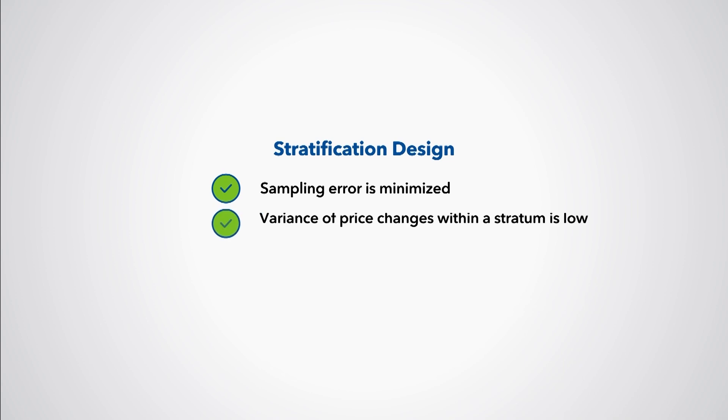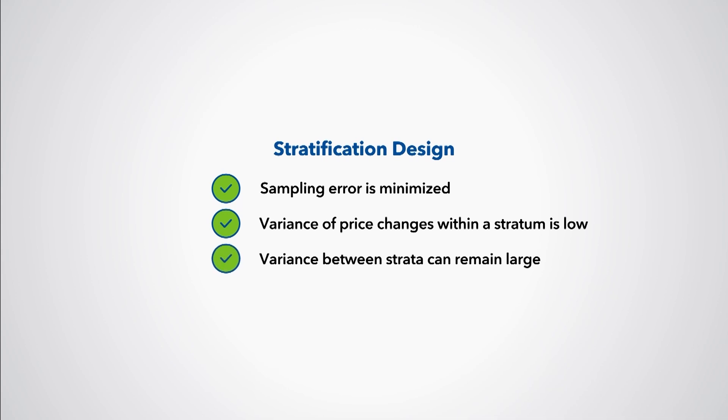The stratification should be designed in a way that the sampling error is minimized. The idea is to construct the strata so that the variance of the price changes within a stratum is low, whereas the variance between the strata can remain large. Within a stratum, a low price-change variance also has the advantage that results of different price indices are likely to be similar. Consequently, the choice of the elementary aggregate price index matters less.